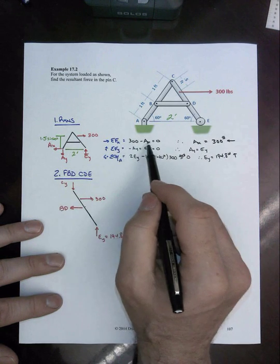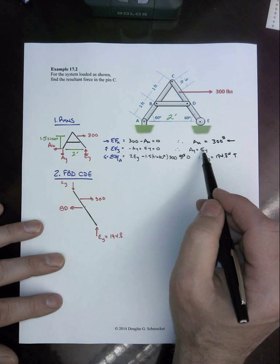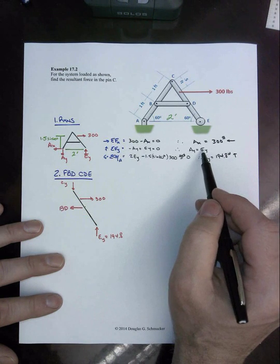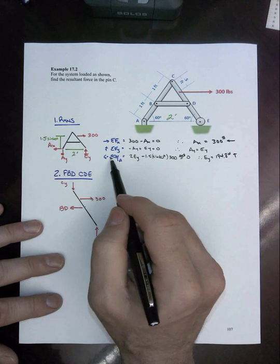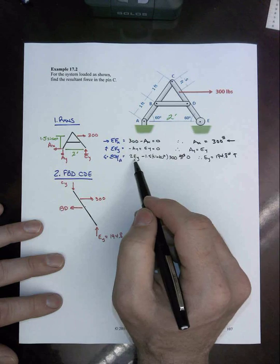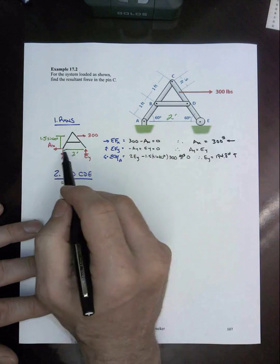Sum of forces in the X, we get the trivial answer that AX is equal to 300. Sum of forces in the Y tell us that AY and EY are the same magnitude but opposite directions. And then sum of the moments about point A.